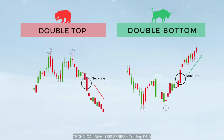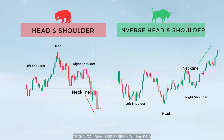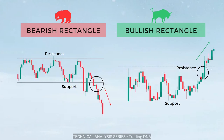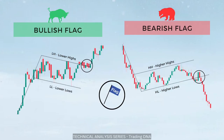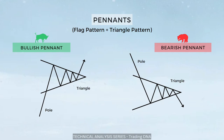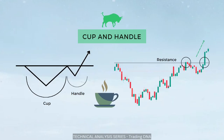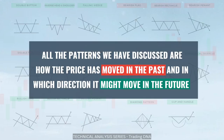Let's have a quick summary of what we have discussed so far: double top, double bottom, head and shoulder, inverse head and shoulder, bearish rectangle, bullish rectangle, ascending triangle, descending triangle, symmetrical triangle, bullish flag, bearish flag, bullish pennant, bearish pennant, rising wedge, falling wedge, cup and handle, and diamond pattern. There might be some other patterns too, but these are the most common patterns. All the patterns discussed show how the price has moved in the past and in which direction it might move in the future. I hope you now understand the basics of price action chart patterns and how to trade each one.